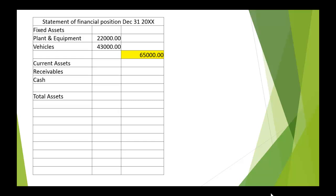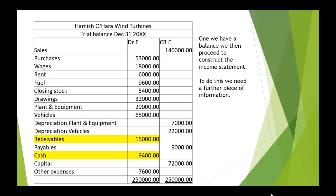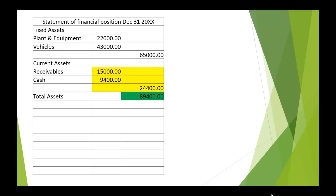Now we look at current assets. There are two current assets in the trial balance: receivables and cash. Receivables was 15,000 and cash was 9,400, giving us 24,400 of current assets. Adding non-current and current assets together, we have total assets of 89,400.